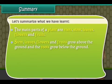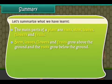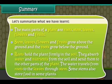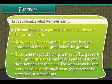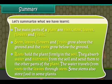Stem, leaves, flowers and fruits grow above the ground, and the roots grow below the ground. Roots hold the plant firmly in the soil; they absorb water and nutrients from the soil and send them to other parts of the plant. The water travels from roots to the leaves through the stem. Some stems also store food in some plants.